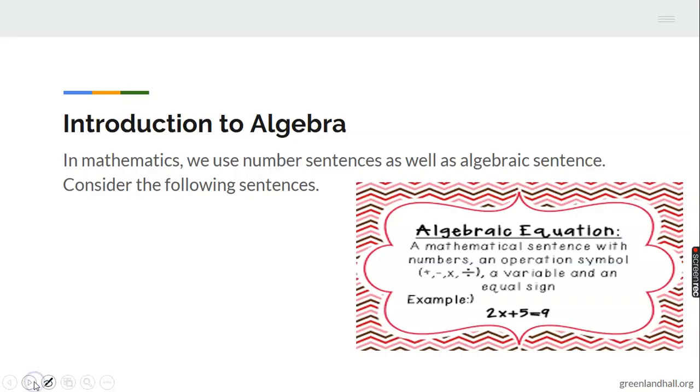We're looking at equations as they relate to mathematics. In mathematics we use number sentences as well as algebraic sentences. We're going to check what algebra is, so a mathematical sentence with numbers, an operation symbol, a variable - these are all called algebraic equations.